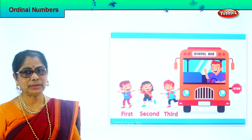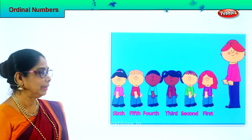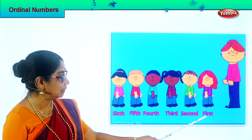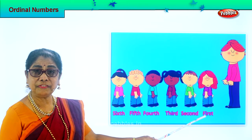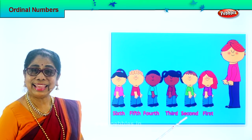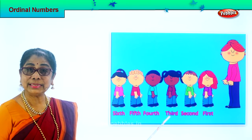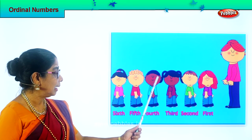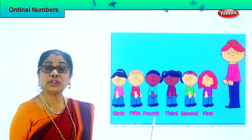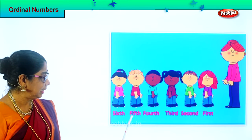Shall we look at another picture? The teacher says, 'Come on, stand in a queue.' The first little girl says, 'I'm first.' Spell first: F-I-R-S-T. First. And here the second little girl: S-E-C-O-N-D. Second. And here the third little girl: T-H-I-R-D. Third. And then the little boy says, 'I'm fourth': F-O-U-R-T-H. Fourth. And another little girl says, 'I'm the fifth': F-I-F-T-H. Fifth.